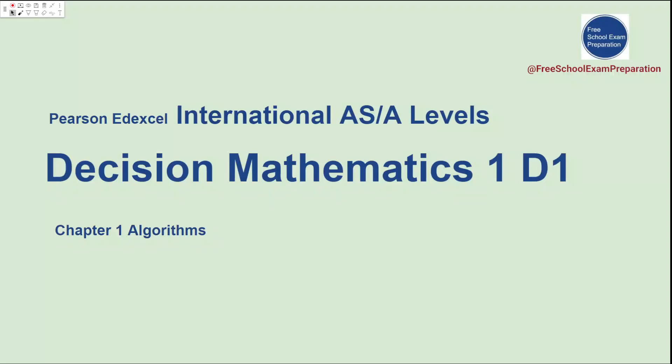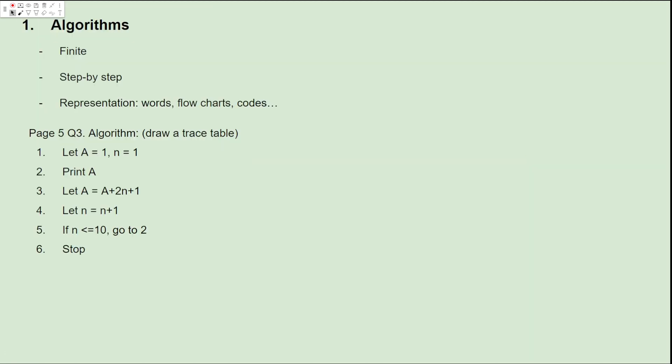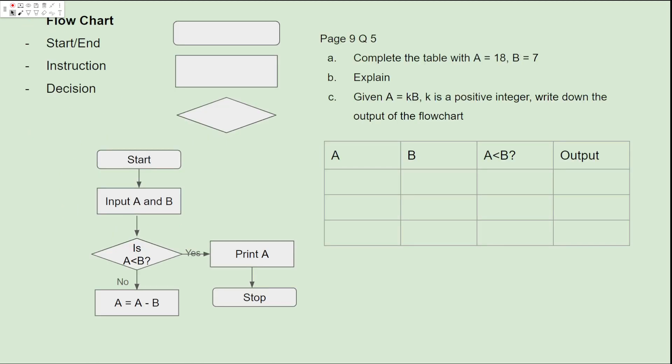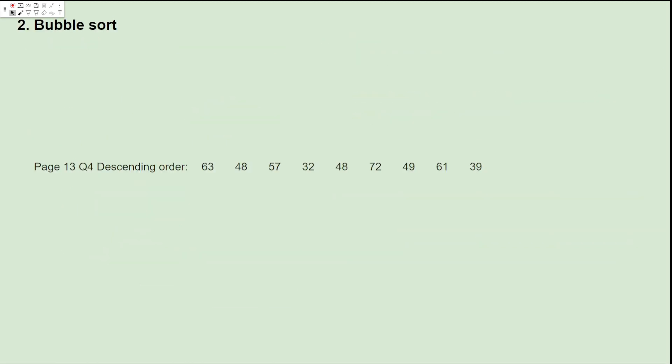Hello. Welcome to Free School Exam Preparation. Today we're going to talk about Edexcel International A, S, and A Levels, Decision Mathematics I. In this lecture, we'll continue Chapter 1, Algorithms. In the first lecture, we talked about what is an algorithm, and we used words or flowcharts to represent an algorithm. Now we're going to look at one sorting algorithm called bubble sort.